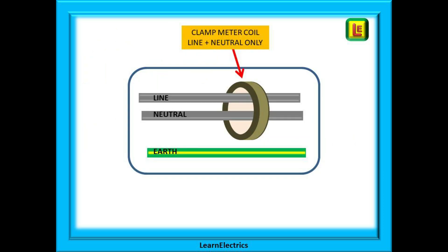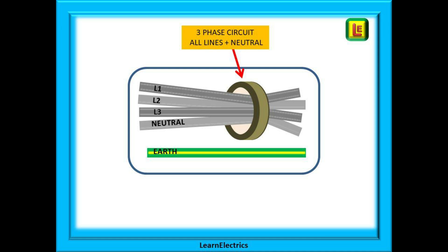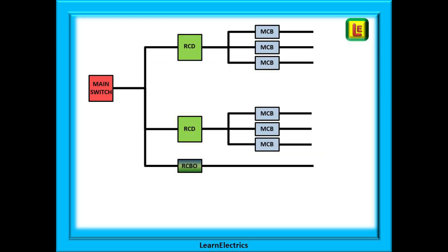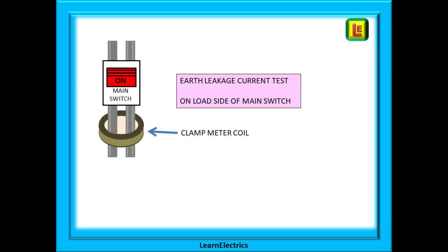How do we do the tests? The clamp meter jaws must only encircle the phase and neutral cables, not the earth, and must only encircle conductors of the circuit under test — the jaws must be fully closed, as any gap will give a false reading. For three-phase circuits, all three phases and the neutral must be enclosed in the clamp. Do not include cables from any other circuit as this will compromise the results. Here is a simple sketch of an installation: a main switch at the consumer unit, two RCDs protecting three MCBs each, and a standalone RCBO.